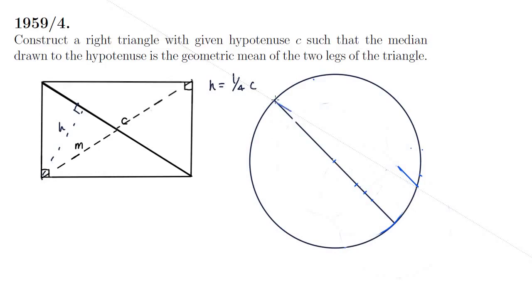And now all we have to do is take the point where that blue line intersects the circle and that is our third point for the triangle.